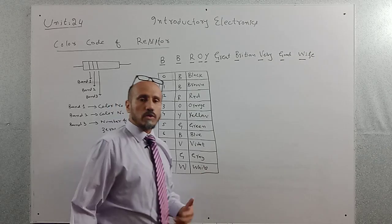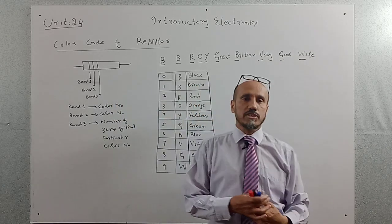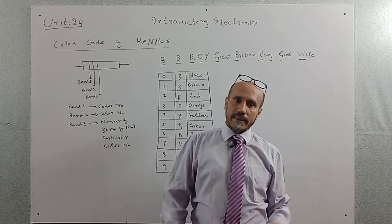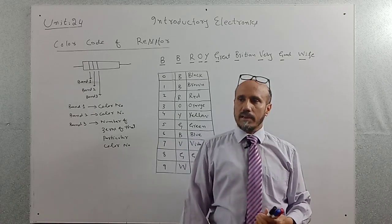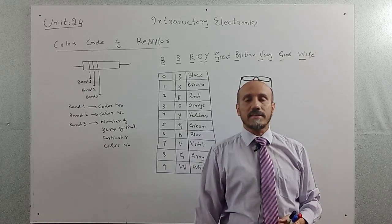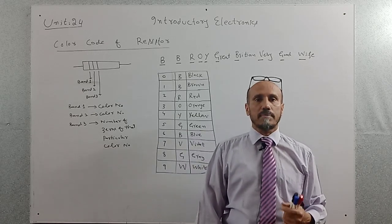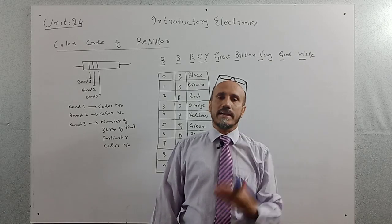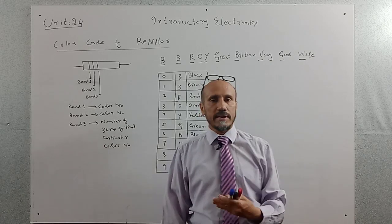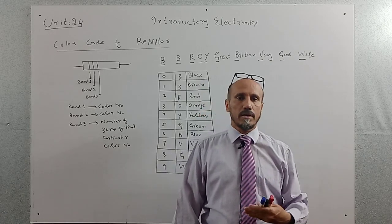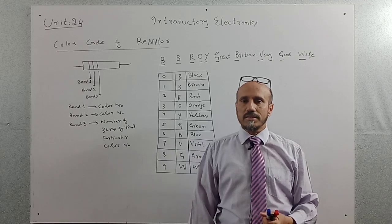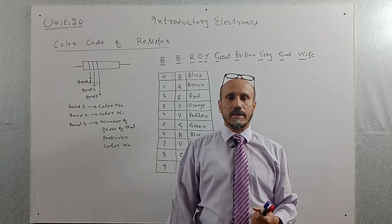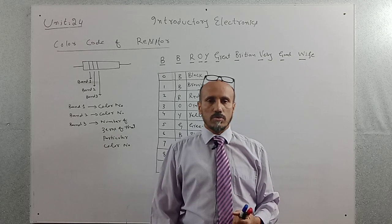There are two types of questions which are asked in the exam. Number one: a diagram will be given and the colors are mentioned — for example red color, green color, blue color — and we determine the value. Or the value of the resistor is given and we have to determine the colors.